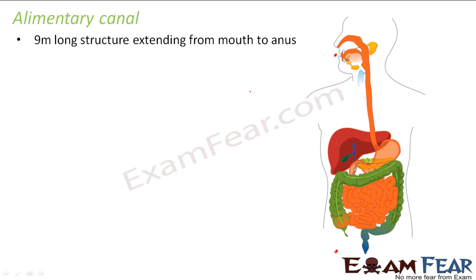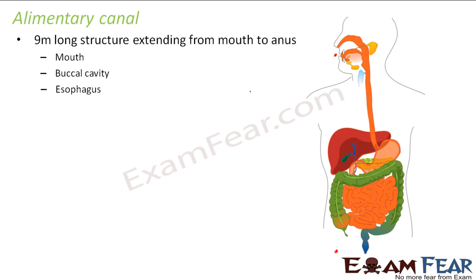So here we will look at the parts of the alimentary canal — the organs which together form the digestive tract. The first part is the mouth, then the buccal cavity which is also the oral cavity, then the esophagus, stomach, small intestine, and large intestine. These are the different parts of the alimentary canal.